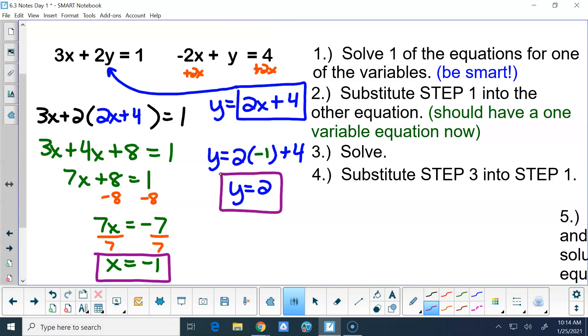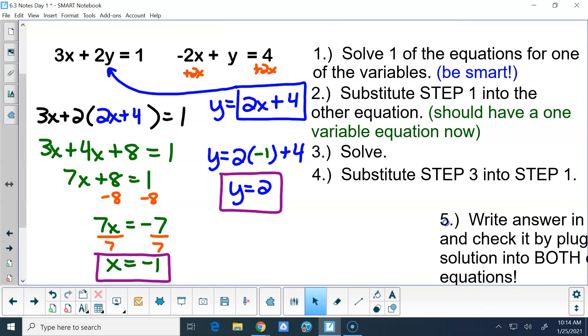If we were to put it in up here, 3 times negative 1 is negative 3, add 3 to both sides, gives me 2y equals 4, y equals 2. Same thing. Put it in here. Negative 2 times negative 1 is negative 2, subtract 2 from both sides, y equals 2. So we get 2 no matter which of those three equations you put it in.